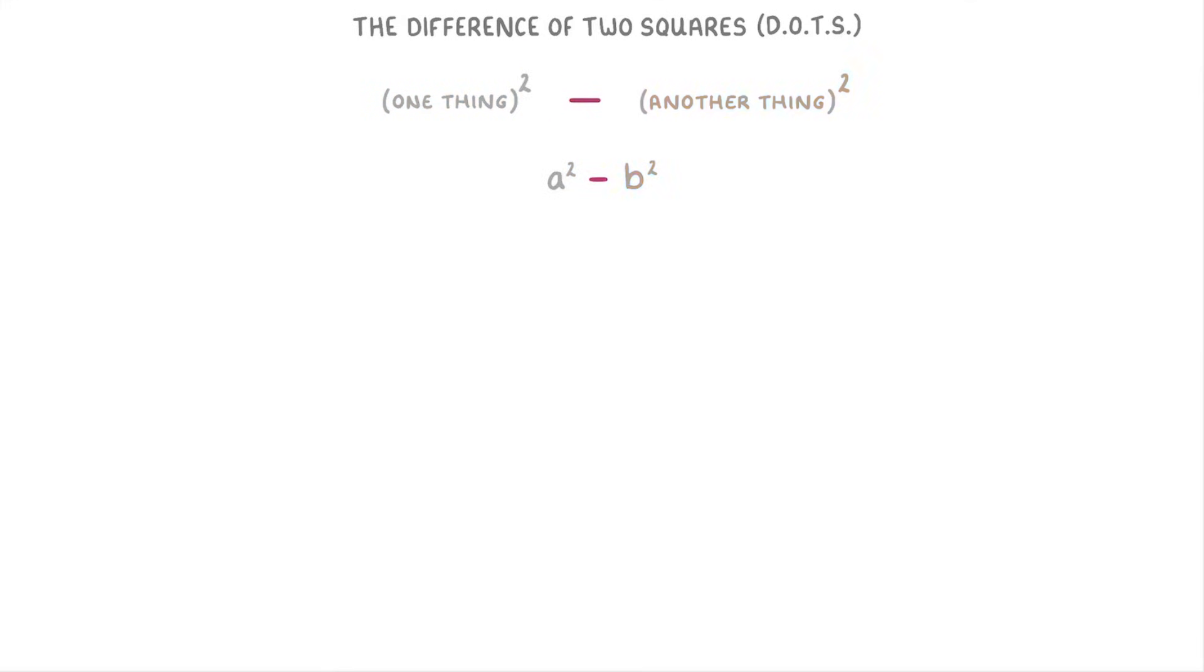We can represent this as a squared minus b squared, although in exams they could take the form of any numbers or letters so the expressions could look very different like x squared minus 25 or 49 minus p squared.